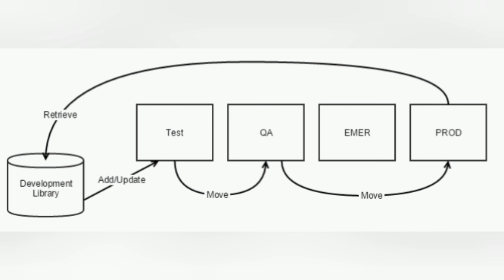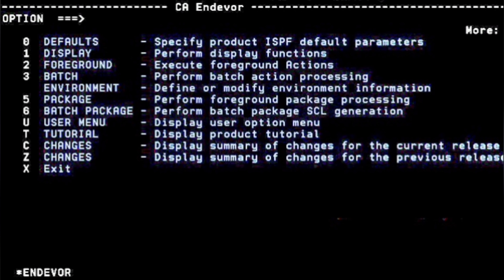Whenever you want to make a change to a component, you first have to retrieve that component or element from production into the development library — the PDS, partition data set. Only then do you make the changes, test it, and move it back to production.